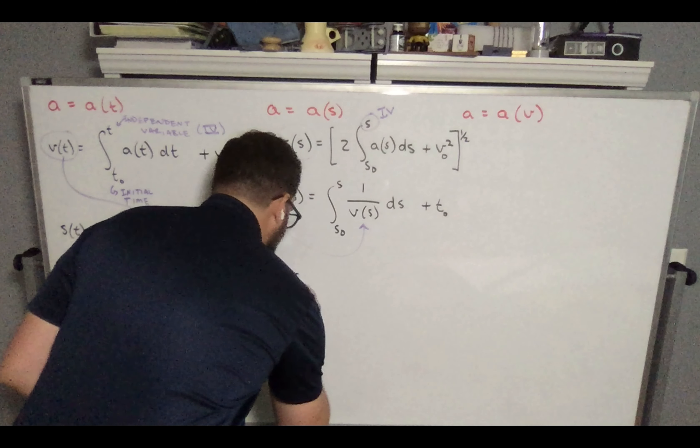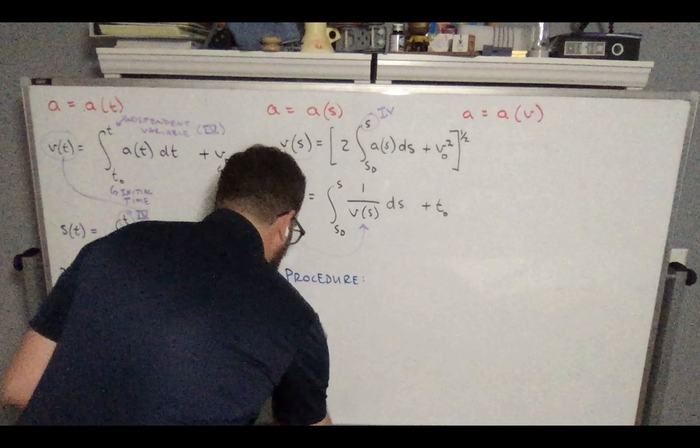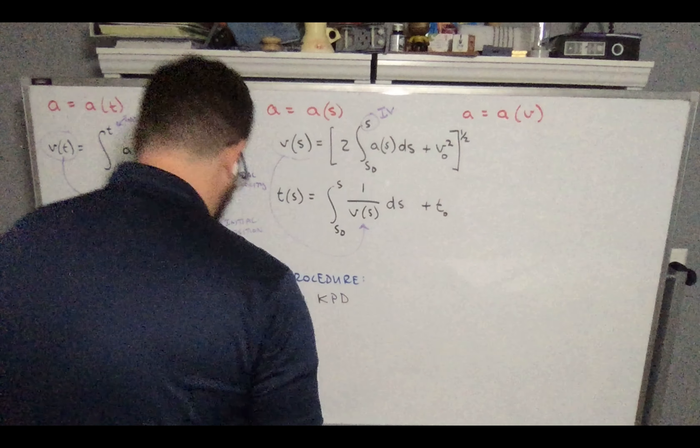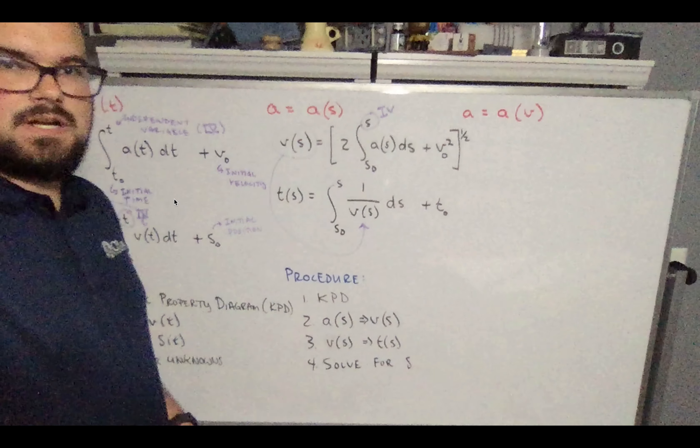So our procedure would be to draw our kinematic property diagram, then to calculate our acceleration as a function of position to velocity as a function of position, then go from velocity as a function of position to time as a function of position, and then we could solve for various positions. So that's acceleration as a function of position.